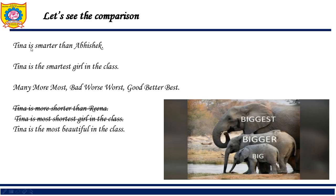If I say Tina is smarter than Abhishek, the word 'smart' is the adjective and I'm comparing them using the word 'smarter.' When I want to compare her with the whole class, I say Tina is the smartest girl in the class.